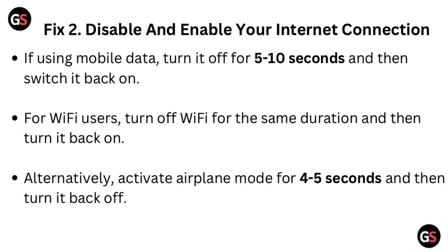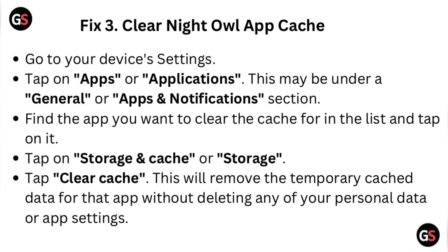Fix 3: Clear the Night Owl app cache. Go to your device settings and tap on Apps or Applications — this may be under a General or Apps & Notifications section. Find the Night Owl app in the list and tap on it. Tap on Storage and Cache, then tap Clear Cache. This will remove temporary cache data from the app without deleting any personal data or app settings.